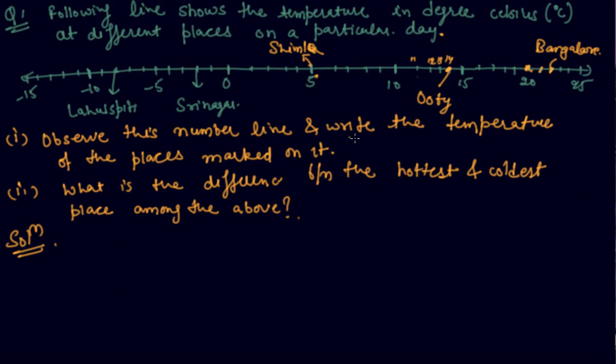Now the question asks us to observe this number line and write the temperature of the places marked on it. So first I will write Lahulspiti. The temperature here is shown, so it is -10 here, -9 here, and -8 here. So the temperature here will be -8 degrees Celsius.